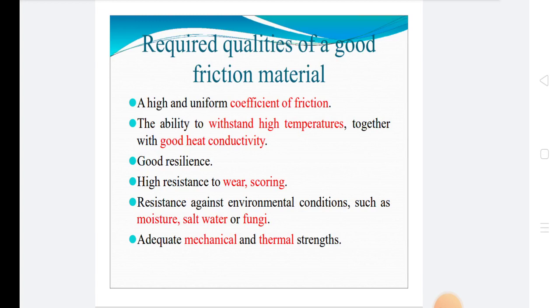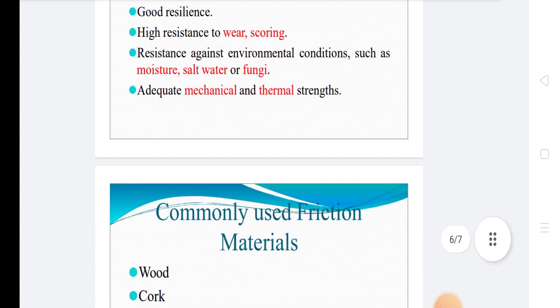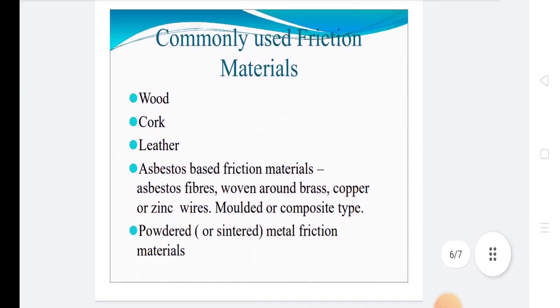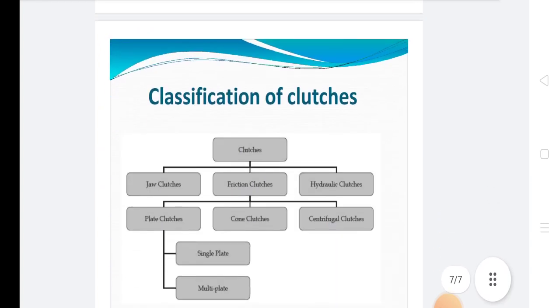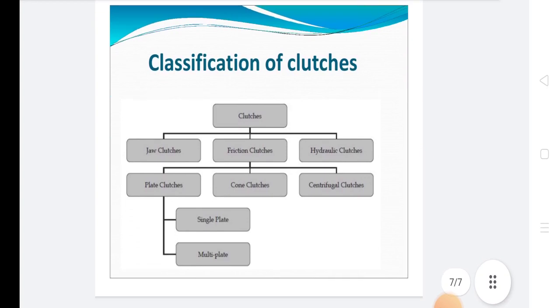Now commonly used friction materials like wood, cork, leather, asbestos based frictional materials, asbestos fibers, woven, ground brass, copper or zinc wires, molded or compressed, molded or composite type and powder or metal friction materials.